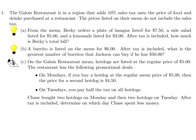The Gallois restaurant is in a region that adds 10% sales tax onto the price of food and drinks purchased at a restaurant. The prices listed on their menu do not include the sales tax. Becky orders a plate of lasagna listed for $7.50, a side salad listed for $5, and lemonade listed for $3. After tax is included, how much is Becky's total bill?